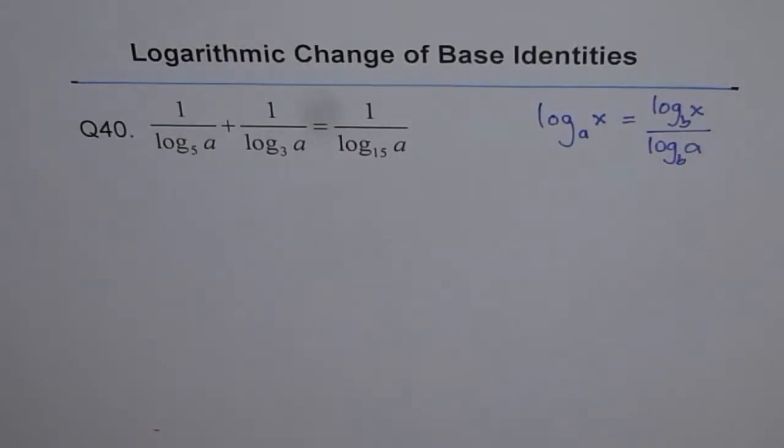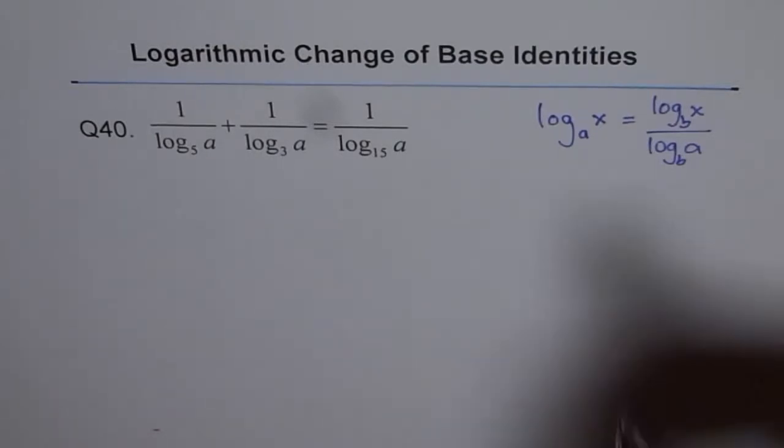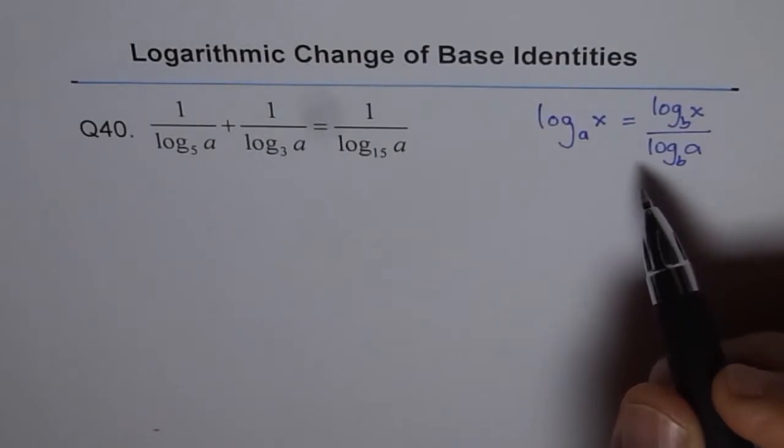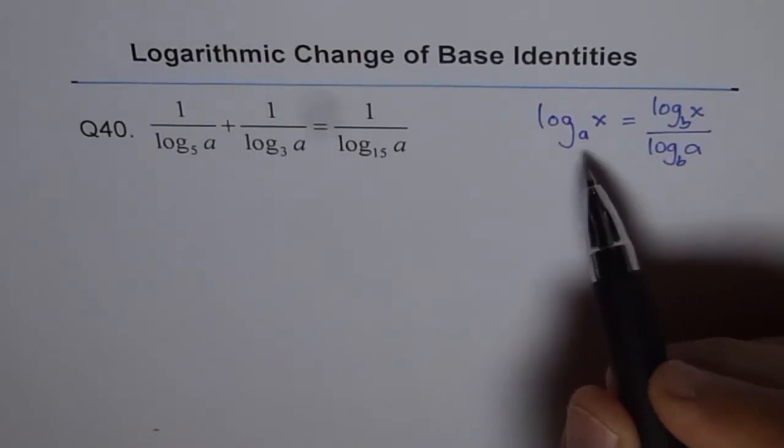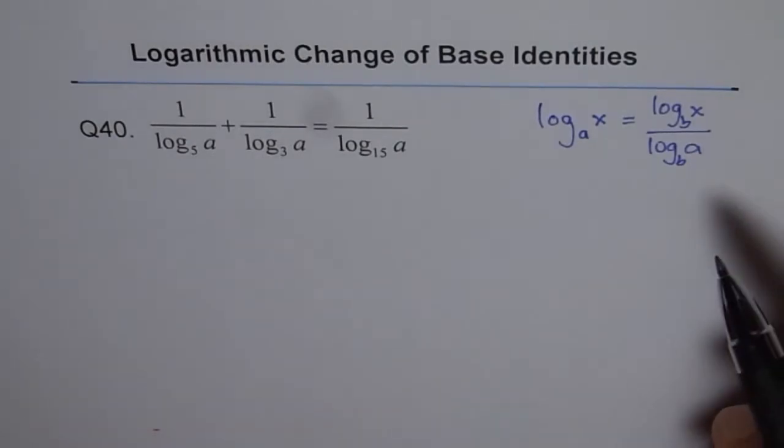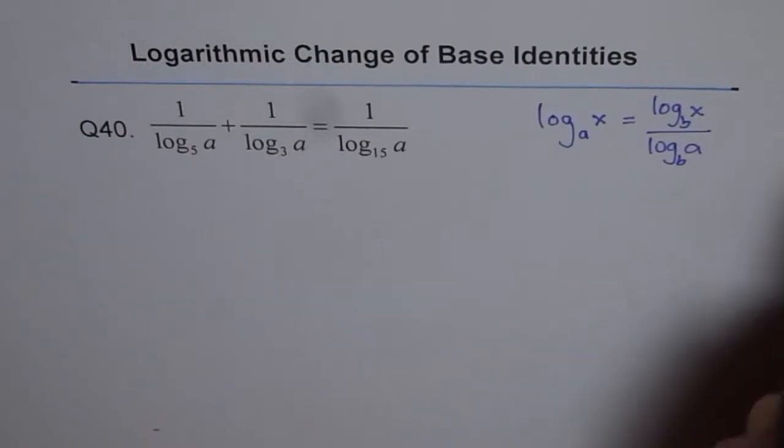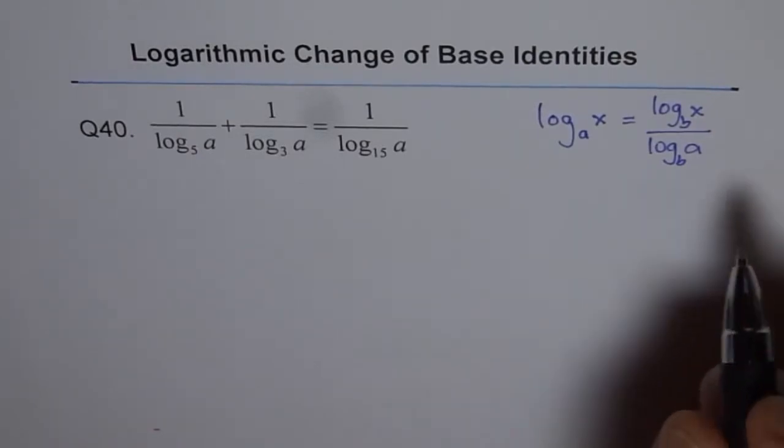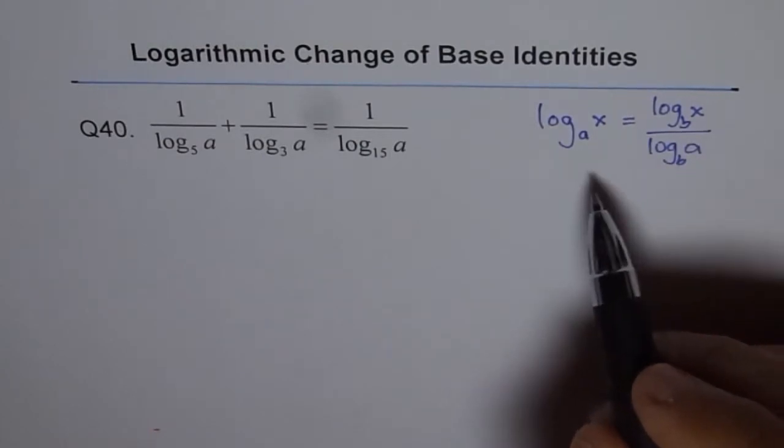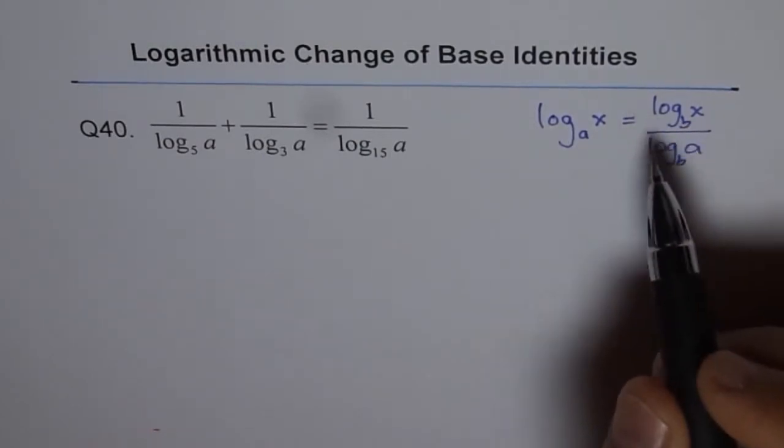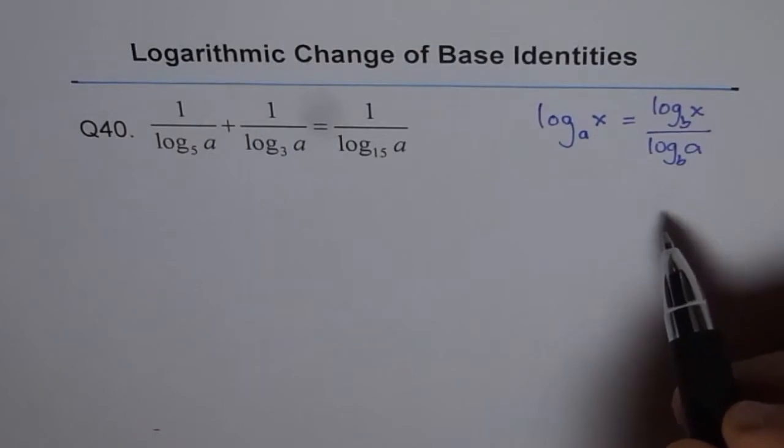This is a very important formula we use constantly. The simple reason is that calculators can only find log to base 10, not any other number. We also have ln, which is log to base e. Those two are possible using calculators, not otherwise. So we always use this to change the base to 10 or e.